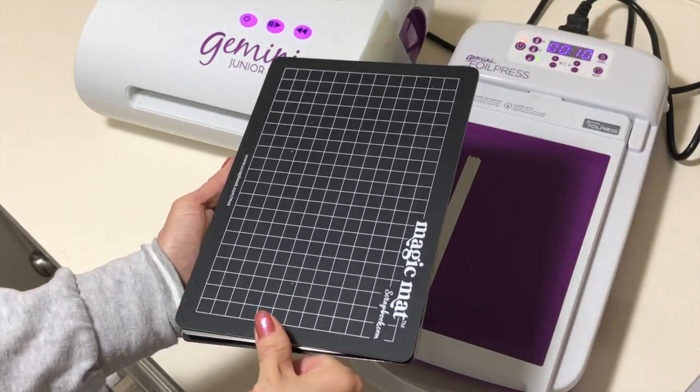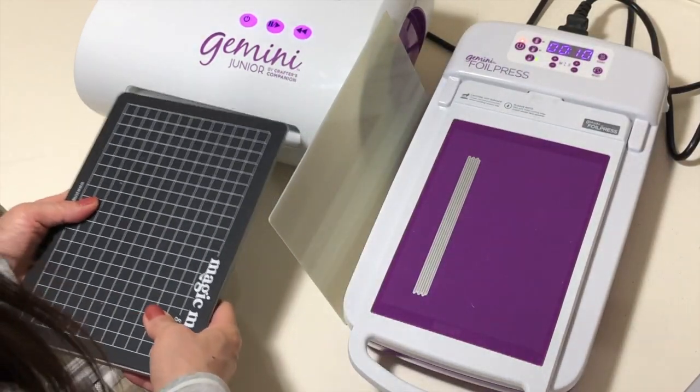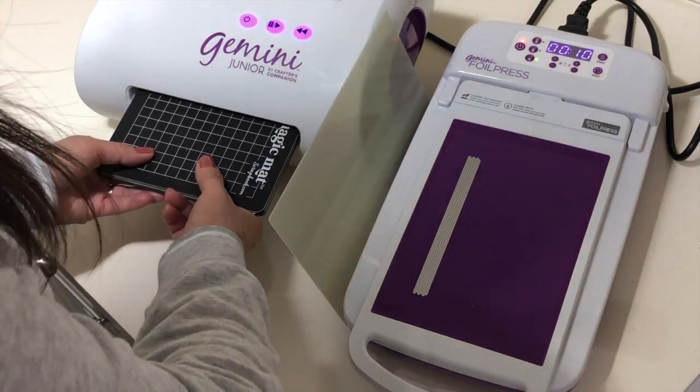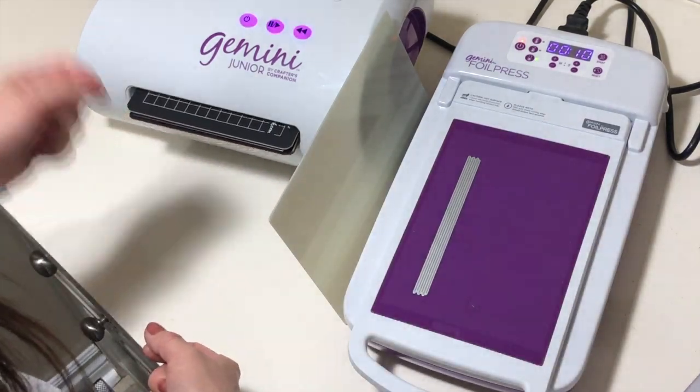The first step is to cut the largest die twice to create the shadow box itself. One of the two pieces will have the window in it and the other one won't. You can make this without a window at all.